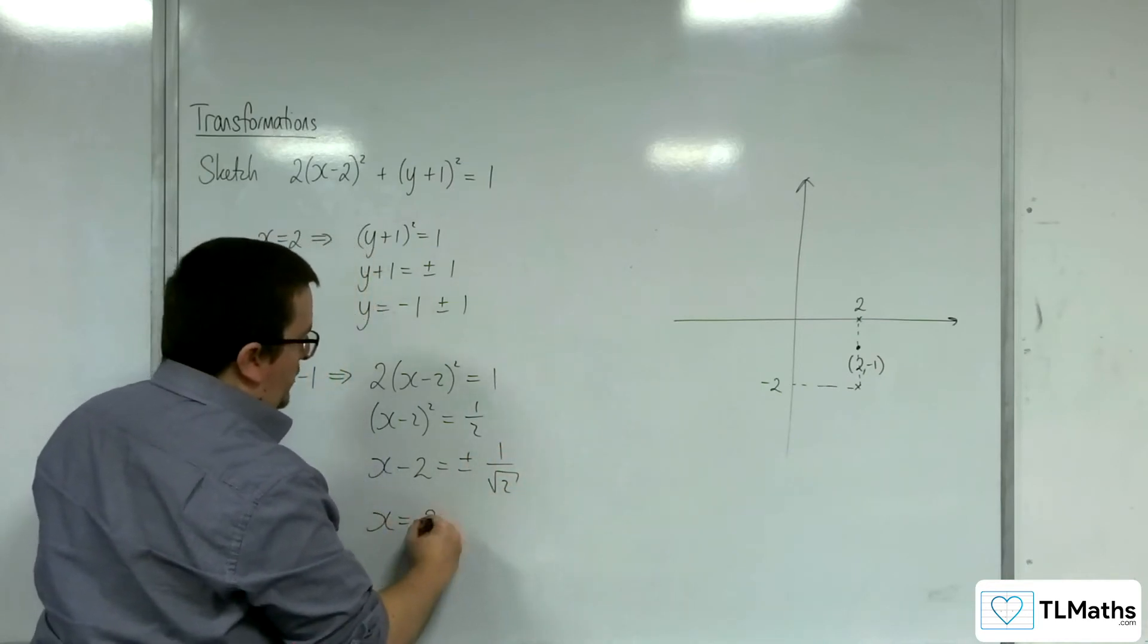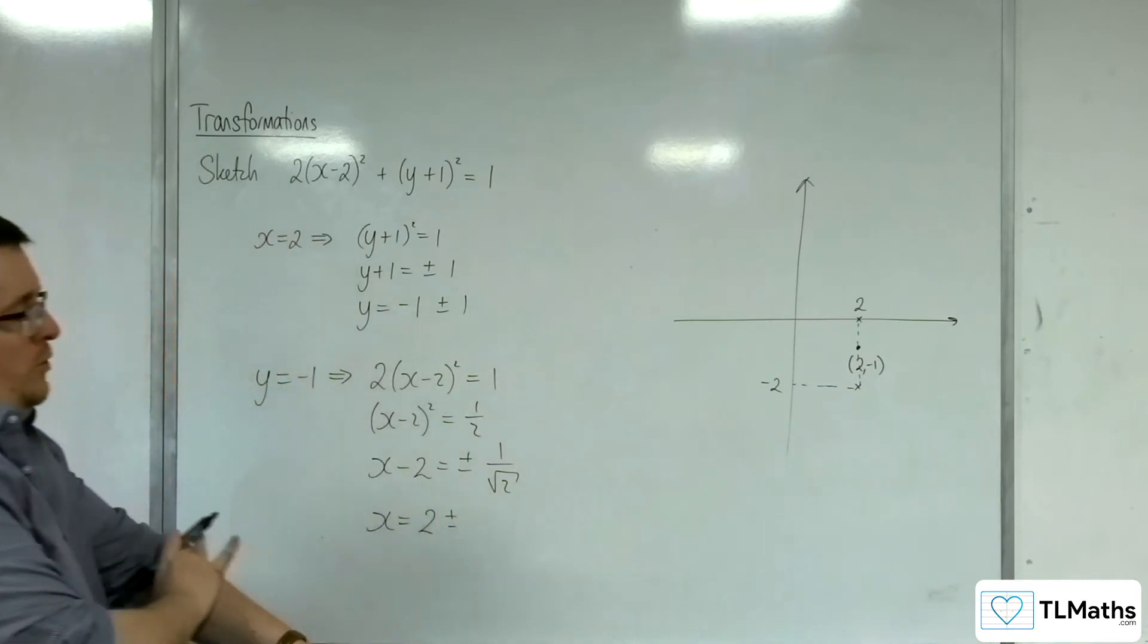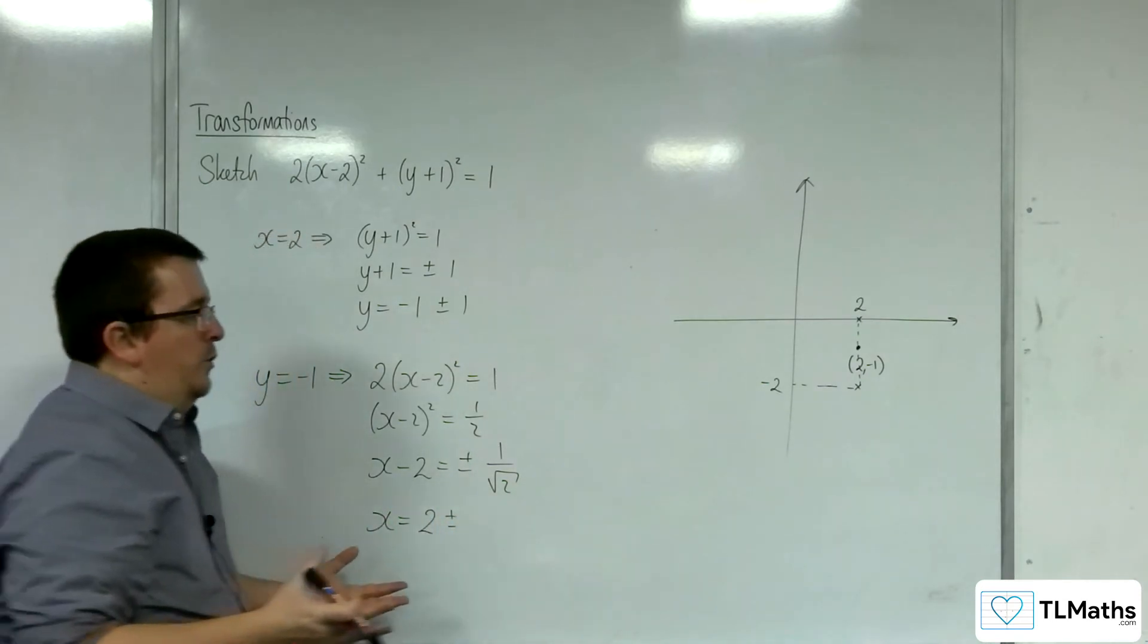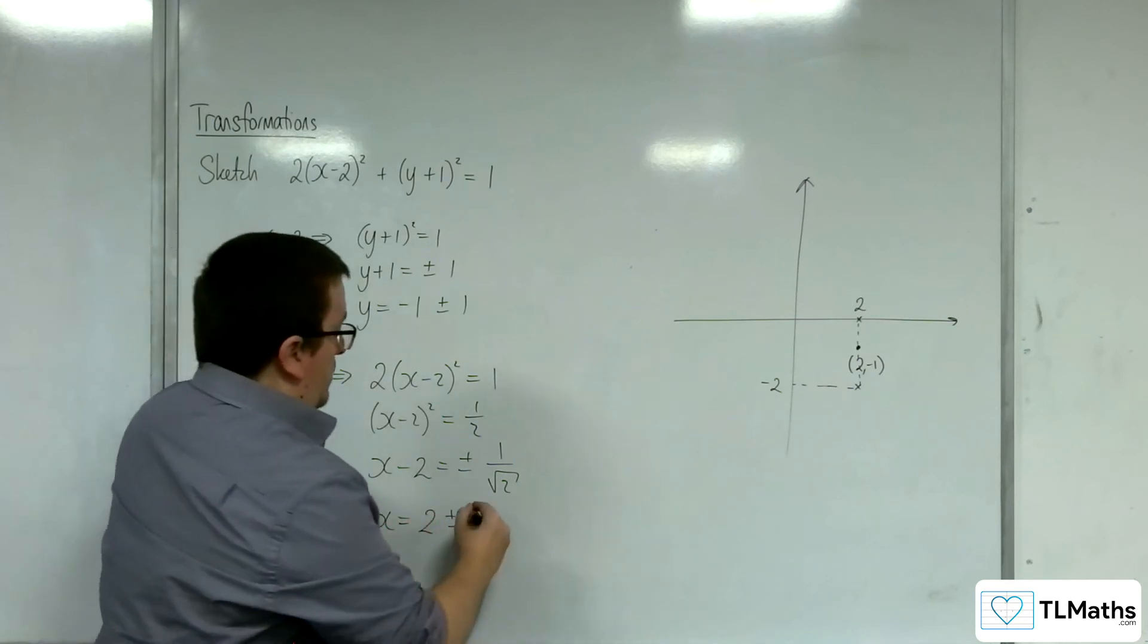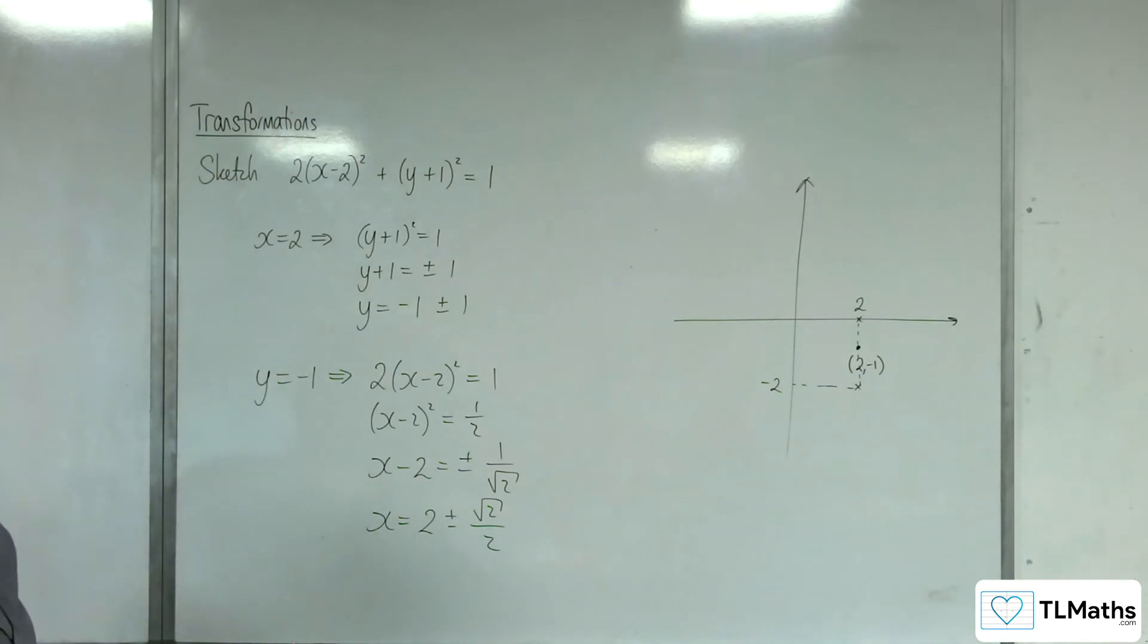So x is going to equal 2 ± 1/√2, which if you rationalize gives us 2 ± √2/2. So those are the x values.